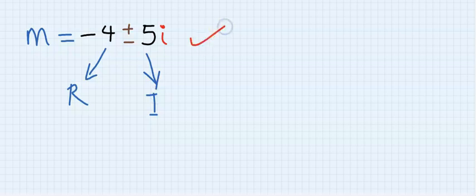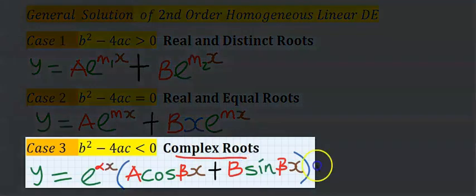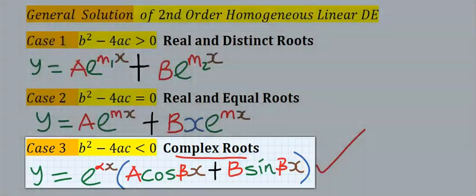The solution of this auxiliary equation, or characteristic equation, will now determine the case that we are going to choose for the general solution. Because we got a complex root, we are going to choose this as the general solution.